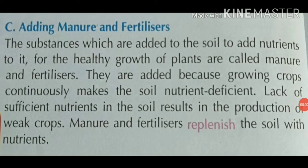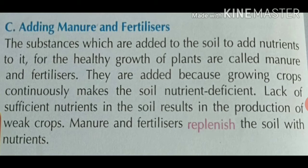Our next topic is adding manure and fertilizers. Manures and fertilizers are very essential for the growth and development of plants because they provide nutrients to the soil. Manure is organic matter and it is used as fertilizer. Manure improves the fertility of the soil. Examples of manure include animal dung — cow dung, horse dung — vegetable peels, or dry leaves.